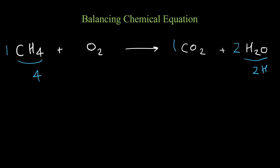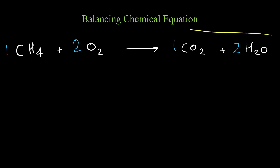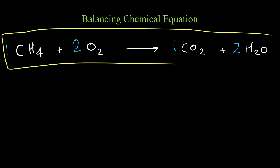Now we need to balance oxygen. On the right side we have two oxygen from carbon dioxide and two oxygen from water, giving four oxygen total. On the left side we have two oxygen in O₂, so we put two in front of O₂. This equation is now balanced.